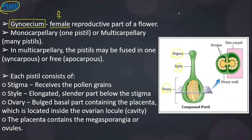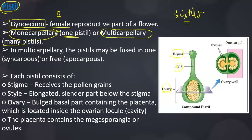A female flower is known as a pistillate flower. If it contains only one pistil, it is called a monocarpellary flower. If it consists of many pistils, it is called a multicarpellary flower.